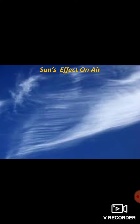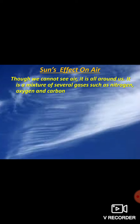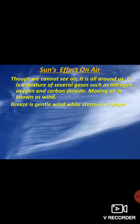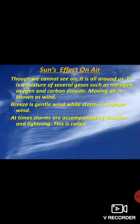Sun's Effect on Air: In Part 1 we studied the sun's effect on water. In this part, we are going to study about the sun's effect on air. Though we cannot see air, it is all around us. It is a mixture of several gases such as nitrogen, oxygen, and carbon dioxide. Moving air is known as wind. Breeze is gentle wind, while a storm is stronger wind. At times, storms are accompanied by thunder and lightning — this is called a thunderstorm. This is how moving air or wind causes weather changes.